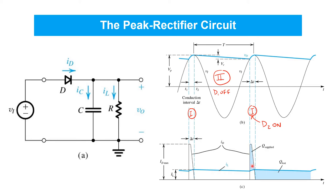This shaded region represents the difference between the diode current and the load current. The capacitor current IC is equal to the diode current minus the load current. So that's a positive charge flowing onto the capacitor, replenishing all the charge that's lost. During the other portion of the waveform, the capacitor current is negative because all of the load current is coming from it.